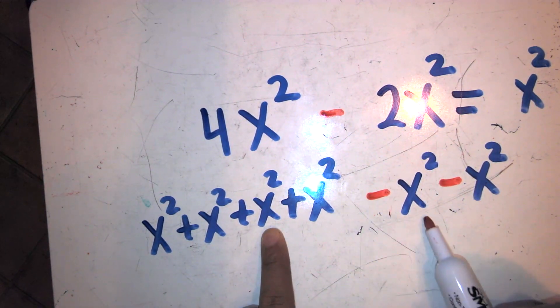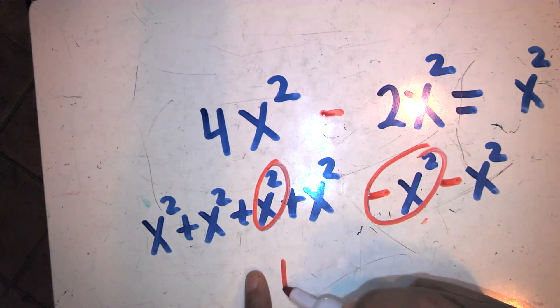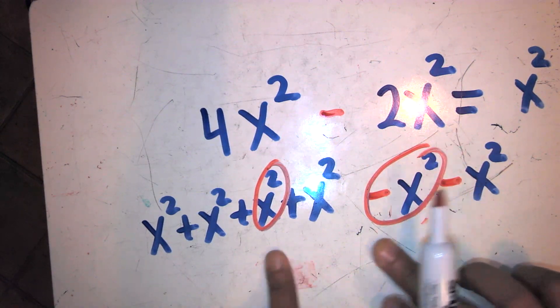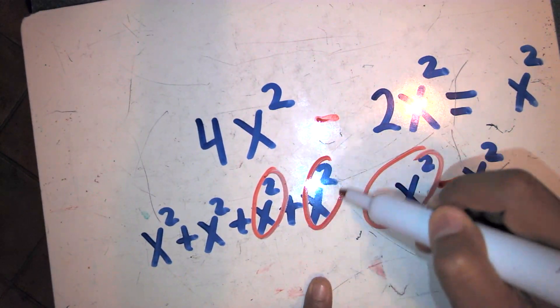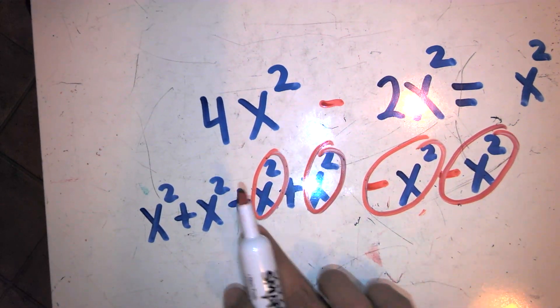So x squared minus x squared cancels, just like one minus one cancels because it gives you zero. And then x squared minus x squared also cancels. So I have two pairs that cancel each other out.